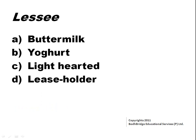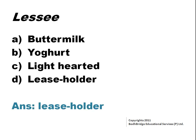Lessee. Lessee is a person who holds the lease of a property. The options are: buttermilk, yogurt, lighthearted, leaseholder. The correct answer is option D, leaseholder.